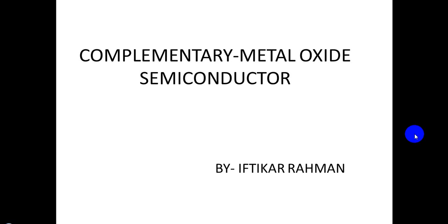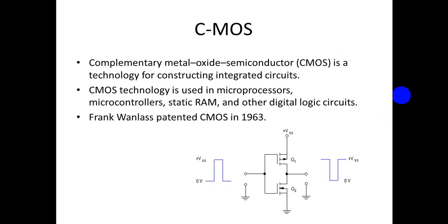My topic is Complementary Metal Oxide Semiconductor. CMOS is a technology for constructing integrated circuits. CMOS technology is used in microprocessors, microcontrollers, static RAM, and other digital logic circuits. It is also used for several analog circuits such as image sensors, data converters, and highly integrated transceivers for many types of communications.